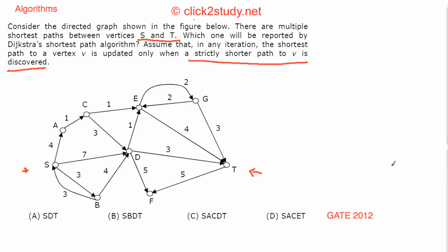Strictly shorter means: suppose your current path to some vertex is 8, and you discover another path that is also 8 — you do not update. You only update when the new path is strictly shorter, such as 7 or less. With that idea in mind, let's implement Dijkstra's algorithm on this graph.